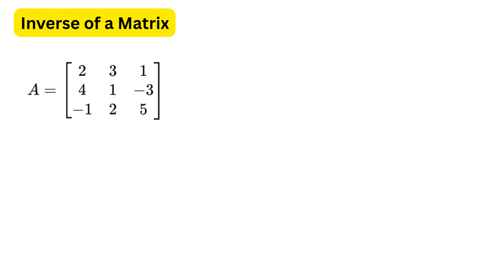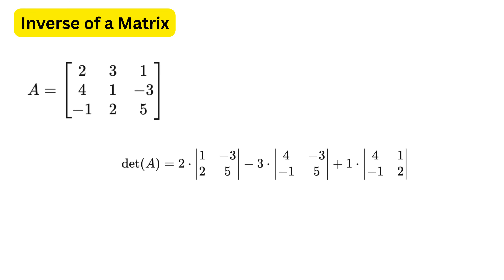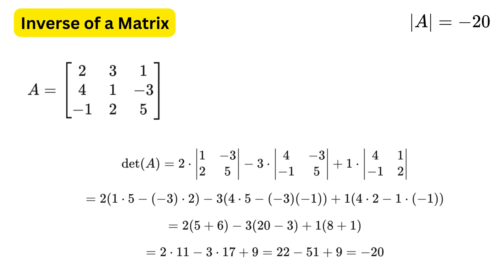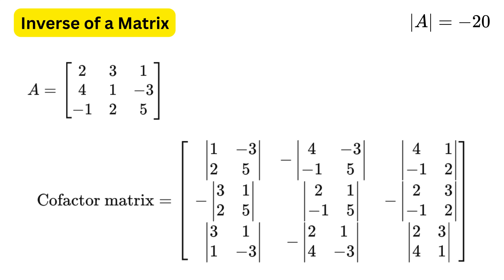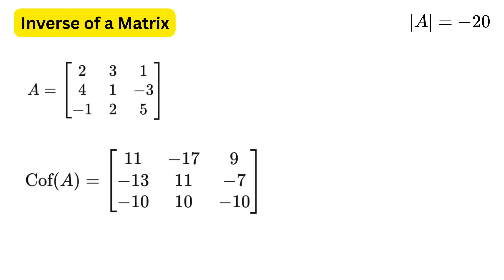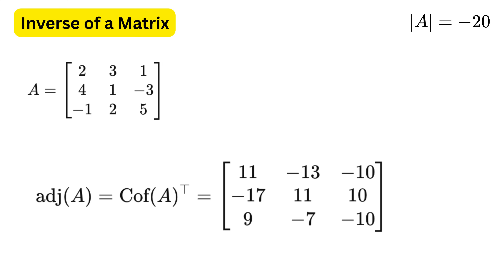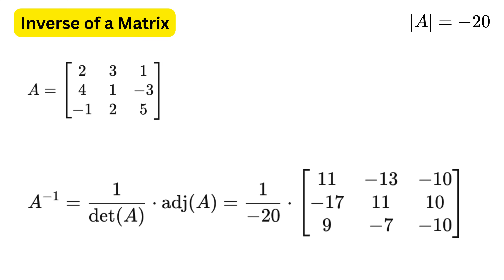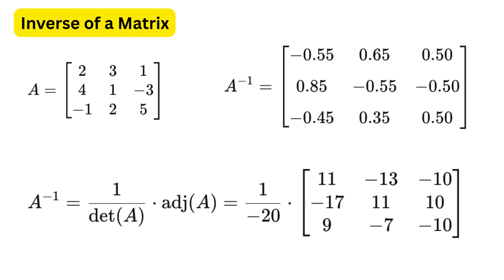To find the inverse of a 3x3 matrix, we follow a similar procedure: first find the determinant of the given matrix, then find the cofactor of all elements to form a cofactor matrix, then find the transpose of this cofactor matrix to give us the adjoint matrix. Finally, A inverse equals the adjoint matrix of A divided by the determinant of A.